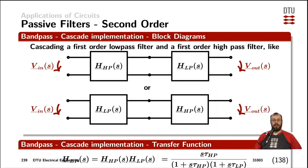To create a filter that suppresses both the low frequencies and the high frequencies, we can create a bandpass. One way of creating a bandpass is by cascading a highpass filter with the lowpass filter. Cascading means that the output of the first one is the input of the other one, and therefore the transfer functions simply get multiplied.